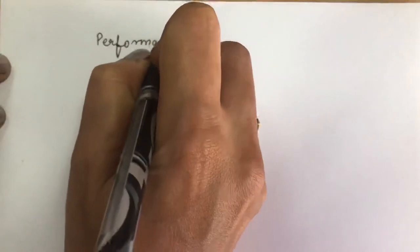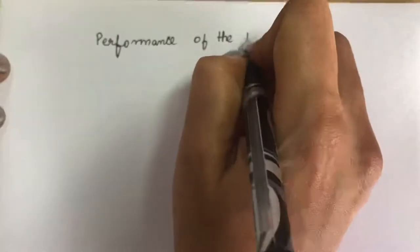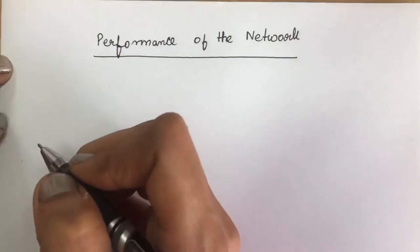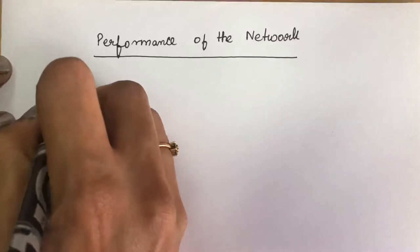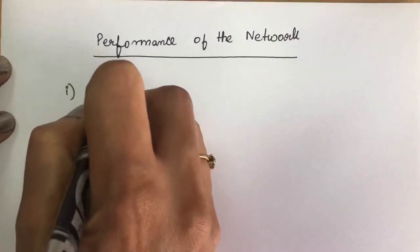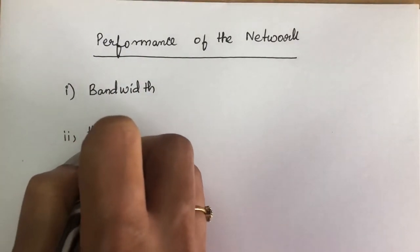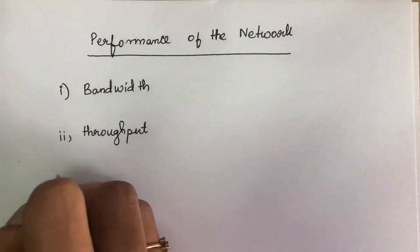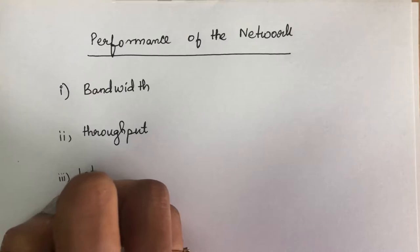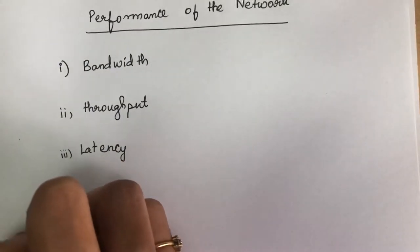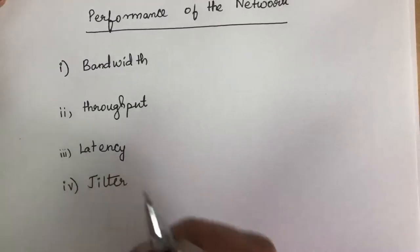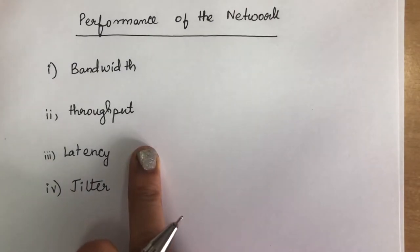Hello everyone. Today we are going to see the topic called performance of the network. Performance of the network is measured in various ways: bandwidth, throughput, latency, and jitter. These are the four ways we can measure the performance of the network.